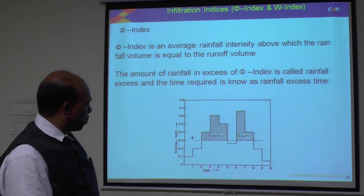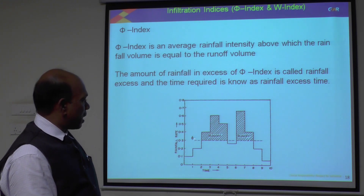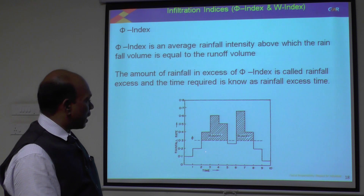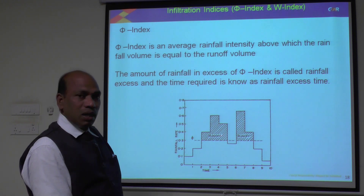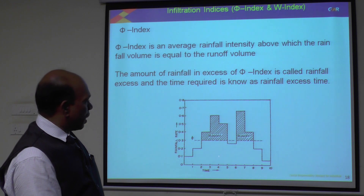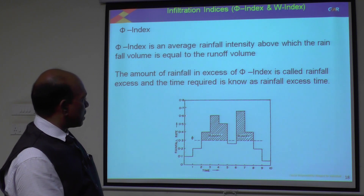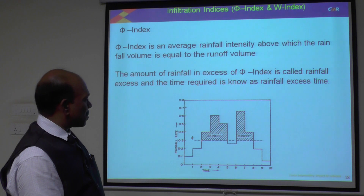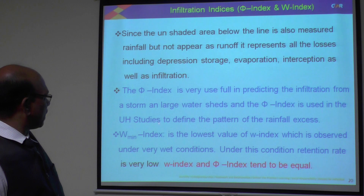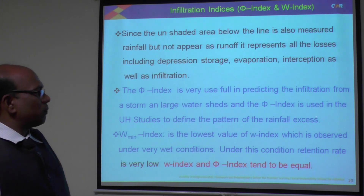The duration 2 to 3 is known as a rainfall excess duration. In the interval 3 to 4, the rainfall intensity is 6 mm per hour but infiltration capacity is only 3 mm per hour, so there is again rainfall excess. The phi (π) index is used in unit hydrograph studies to define the pattern of rainfall excess.